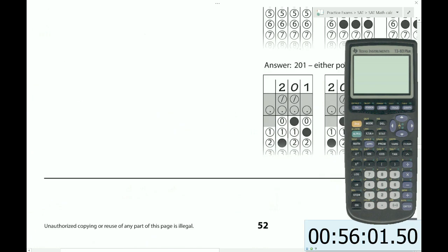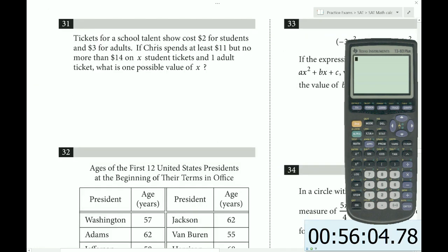We're in the grid-ins. Tickets for a school talent show cost $2 for students and $3 for adults. If Chris spends at least $11 but no more than $14 on x student tickets and one adult ticket, what is the possible value of x? We are buying x student tickets at $2 each, so that's 2x, plus one adult ticket for $3.